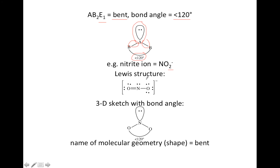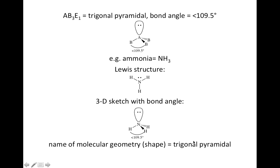The example here is the nitrite ion, NO2⁻ — not nitrate, but nitrite. Here's the Lewis structure — you can see there are two oxygen atoms bonded to the center, but this time there's a lone pair, so it's AB2E. Here's the sketch with N's and O's replacing the A's and B's. When you go to name the shape, the shape is determined by just the atoms, not the lone pair. You can see the N and the O's are not in a straight line, so you get a bent shape.